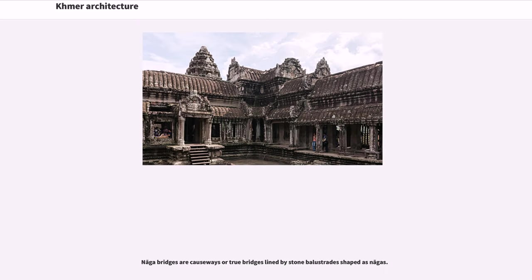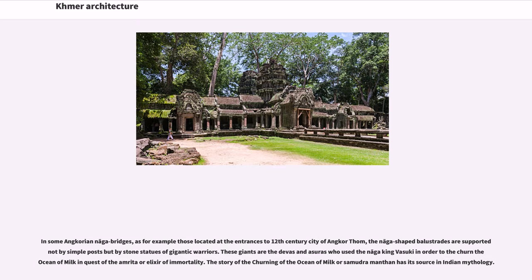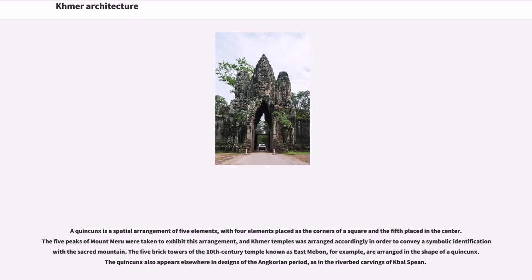Naga bridges are causeways or true bridges lined by stone balustrades shaped as nagas. In some Angkorian naga bridges, as for example those at the entrances to the 12th-century city of Angkor Thom, the naga-shaped balustrades are supported not by simple posts but by stone statues of gigantic warriors. These giants are the devas and asuras who used the naga king Vasuki to churn the ocean of milk in quest of the Amrita, or elixir of immortality. A quincunx is a spatial arrangement of five elements, with four at the corners of a square and the fifth in the center. The five peaks of Mount Meru were taken to exhibit this arrangement, and Khmer temples were arranged accordingly to convey symbolic identification with the sacred mountain. The five brick towers of the 10th-century East Mebon, for example, are arranged in the shape of a quincunx, which also appears in the riverbed carvings of Kbal Spean.